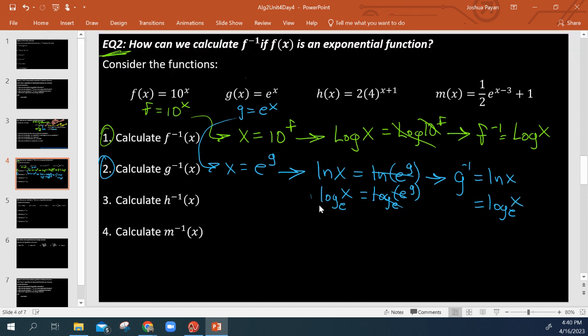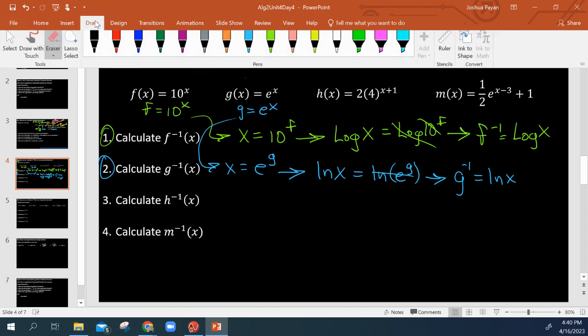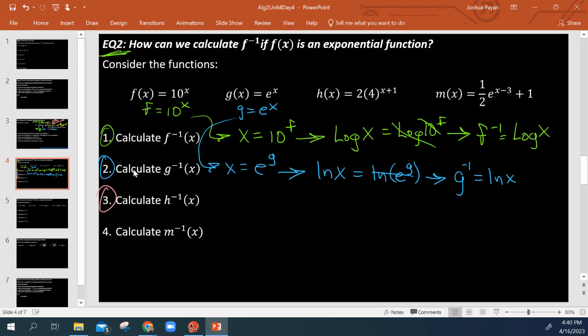So pretty straightforward there. Not rocket-sciencing anything whatsoever. Inverses are not a difficult concept. Okay, let's keep going. So now we are looking at H of X. So H is equal to 2, oh this is getting a little uglier, times 4 to the X plus 1 power. And again, we're going to flip a roo. So this becomes X equals 2 times 4 to the H plus 1.